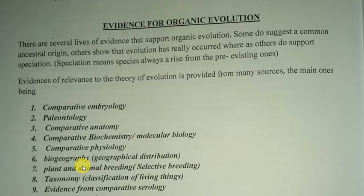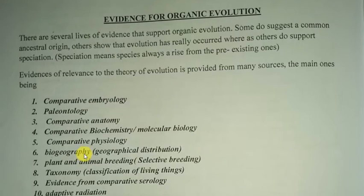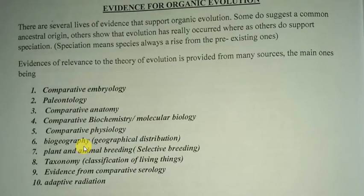There are several lines of evidence that support organic evolution. Some suggest a common ancestral origin, others show that evolution has really occurred, while others support the emergence of species.